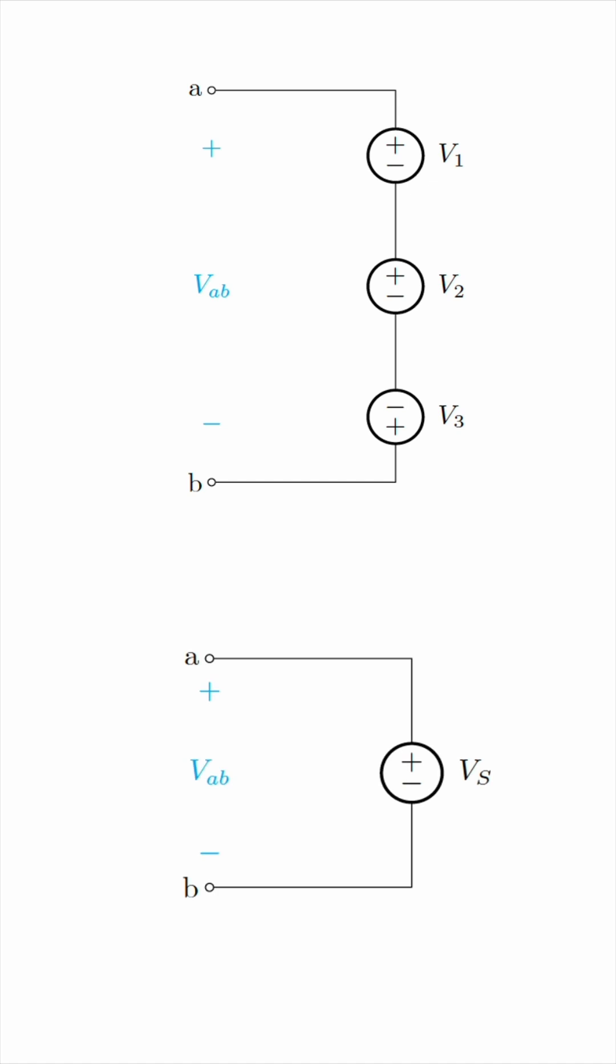If the minus of one source is connected to the plus of another, like V1 and V2 in this example, then you would add them together. Think of the minus and plus as cancelling out, leaving only the plus at the very beginning of V1 and the minus at the very end of V2. So think of that new source V1 plus V2 as the combination of the two sources.